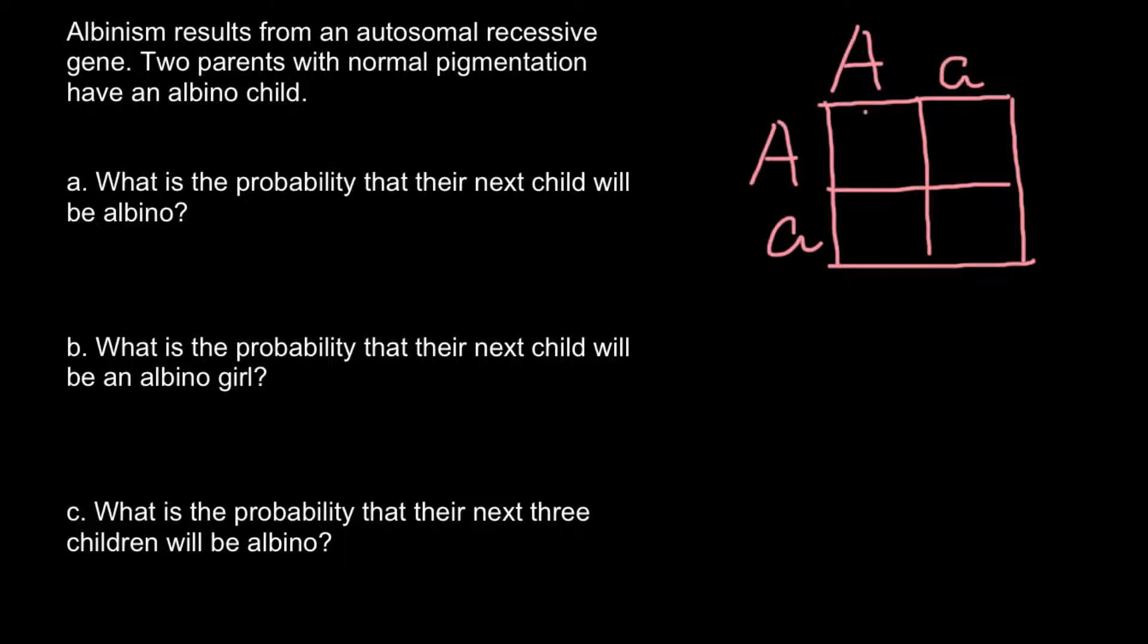So here we would have capital A capital A, normal phenotype. Here we would have capital A small a, also normal phenotype, and this is also going to be normal phenotype here. And here we would have homozygous recessive genotype, and this child would be affected.